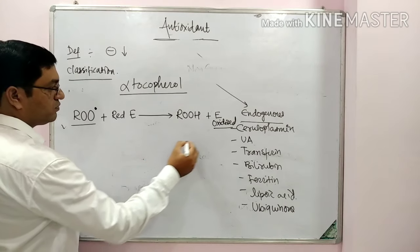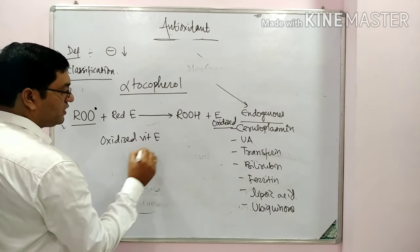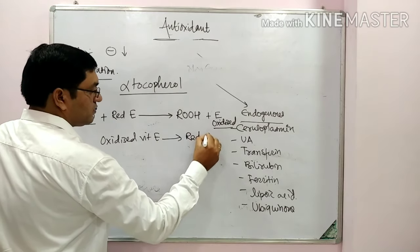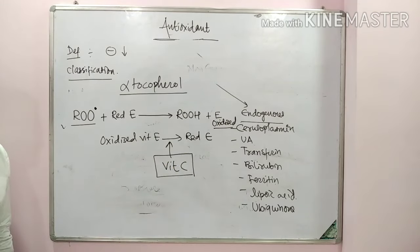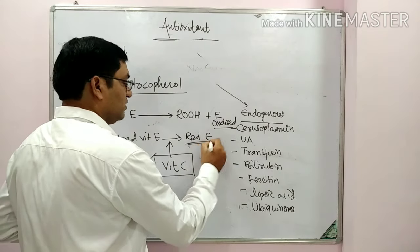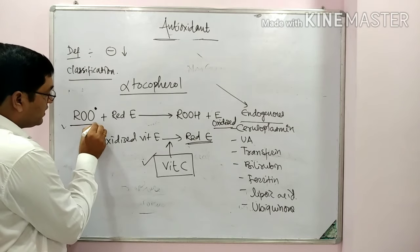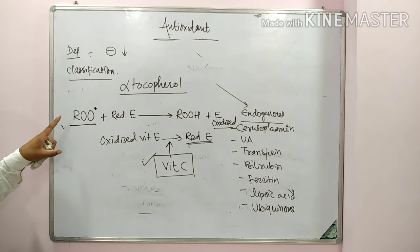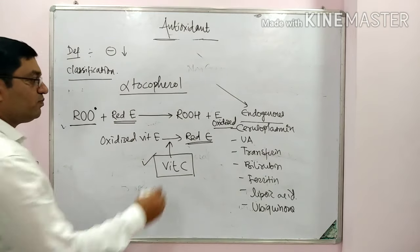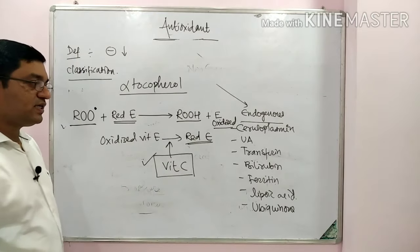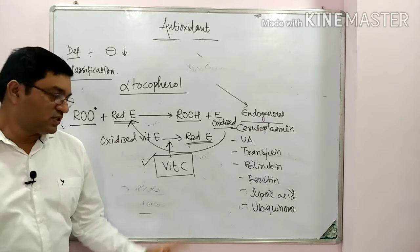This oxidized vitamin E is converted back into reduced vitamin E with the help of vitamin C — ascorbic acid. Hence it is known as 'vitamin C spares the function of vitamin E in antioxidant property.' So the lipid peroxyl radical combines with reduced vitamin E, forming hydroxy peroxide radical and oxidized vitamin E, which is then regenerated by vitamin C.